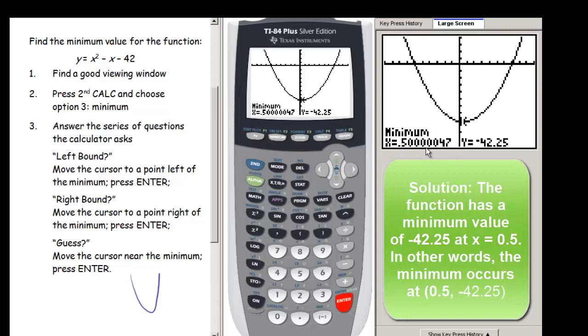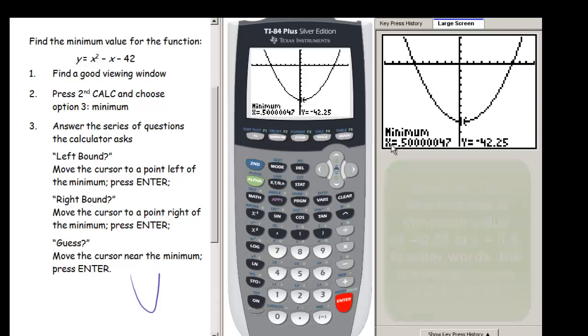Your number might be slightly different. In fact, it might even have been x equals .49999999. So you're going to need to round to .5. So if we were trying to find a maximum value of our function, we would do a very similar process, but instead of choosing minimum, we would choose maximum. Again though, you have to answer that series of three questions.